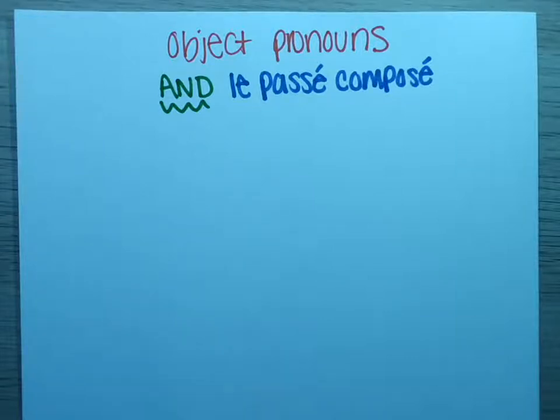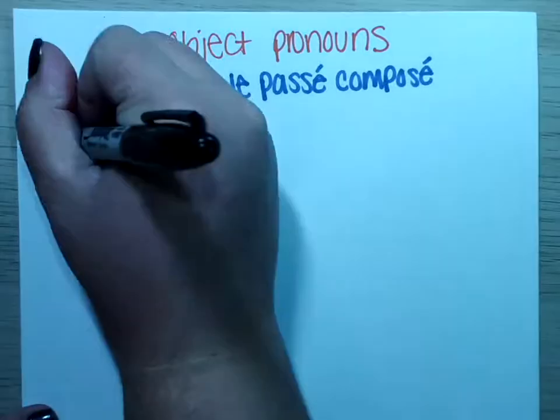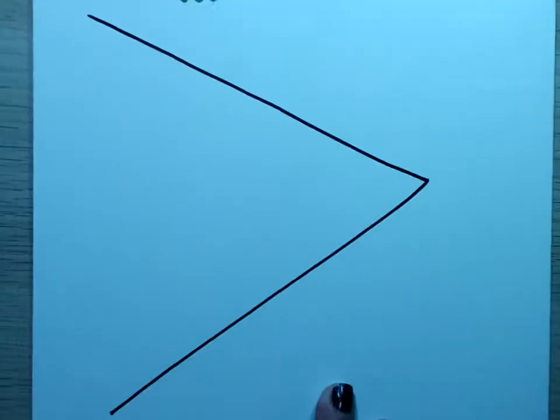We had already learned most of them — we had only not learned two. We're going to talk about those two pronouns and then jump into what those pronouns look like in the passé composé. While we get started, we're going to draw on our note sheet this familiar triangle, and then fill it in with all the pronouns we had previously learned plus our new pronouns.